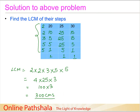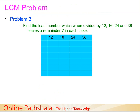Now let us take one more problem. We need to find the least number which, when divided by 12, 16, 24, and 36, leaves a remainder of 7 in each case. Since we need to find a least number divisible by all four numbers, this clearly calls for LCM. We will handle the remainder 7 after finding the LCM.